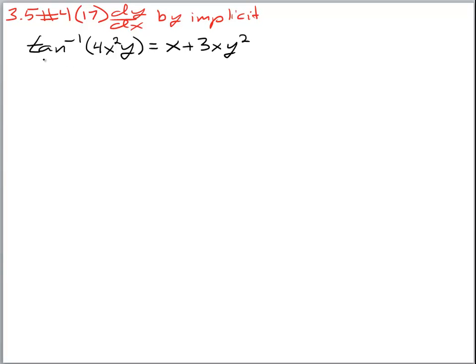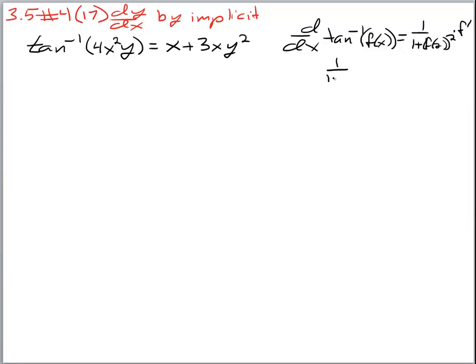The first thing we have to recognize is that we are dealing with a tan inverse, and we have to remember that the derivative of tan inverse of f(x) is 1 over 1 plus f(x) squared times the derivative of f(x). The book writes it as 1 over 1 plus x squared, assuming we are just taking the derivative of x, but that doesn't account for differentiating something other than just x — we have to use the chain rule.